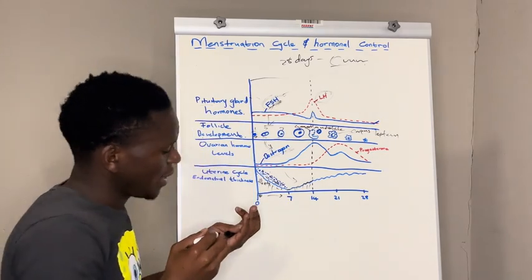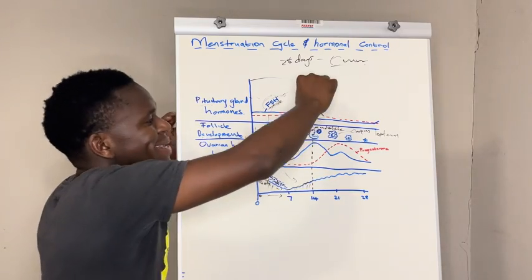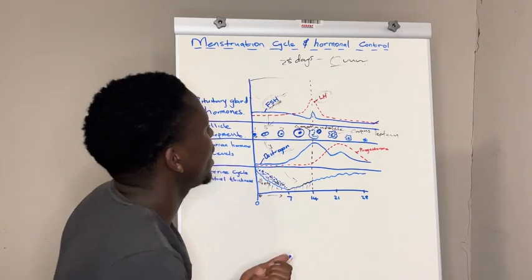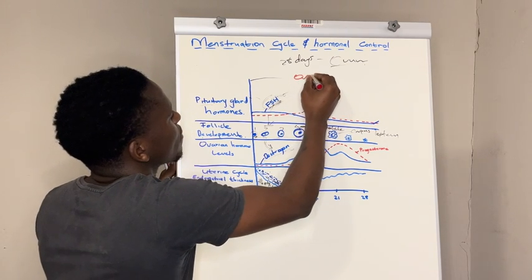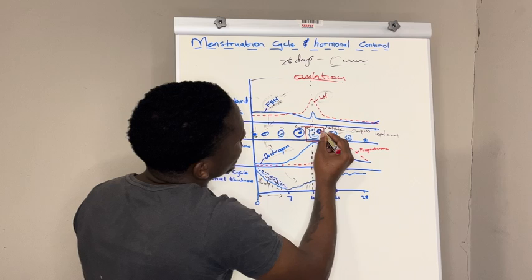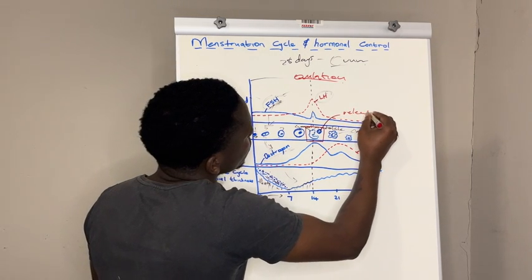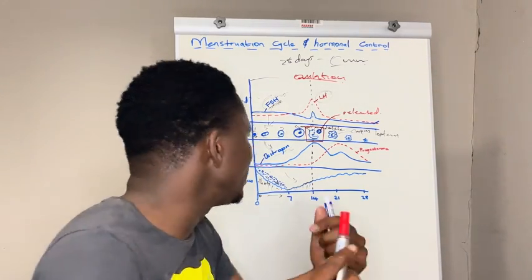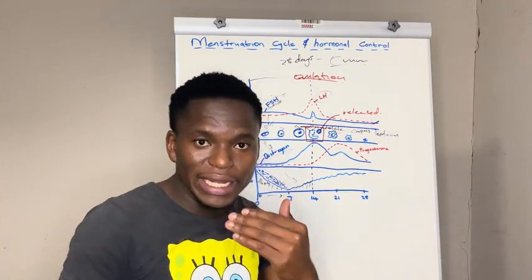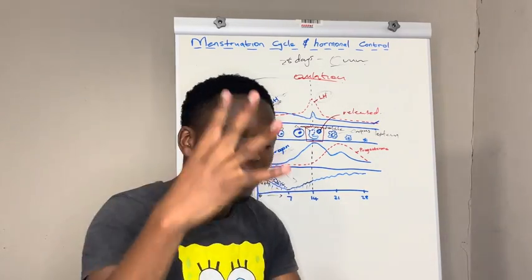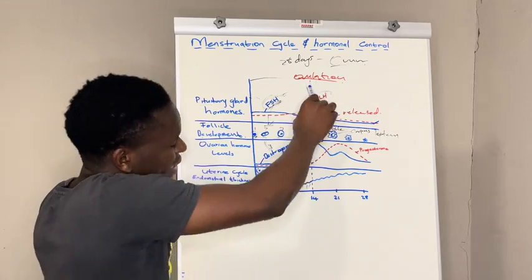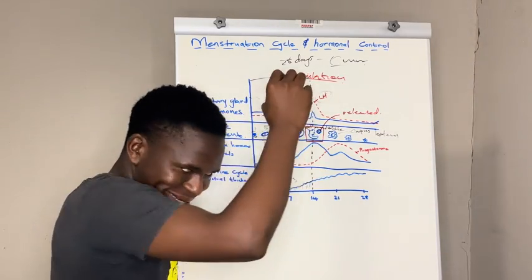The pituitary gland will secrete the hormone luteinizing hormone. The luteinizing hormone will convert the Graafian follicle into corpus luteum. The moment you see high levels of luteinizing hormone, just know that we are going to have the process known as ovulation — where an ovum is being released. Ovulation takes place exactly at day 14.